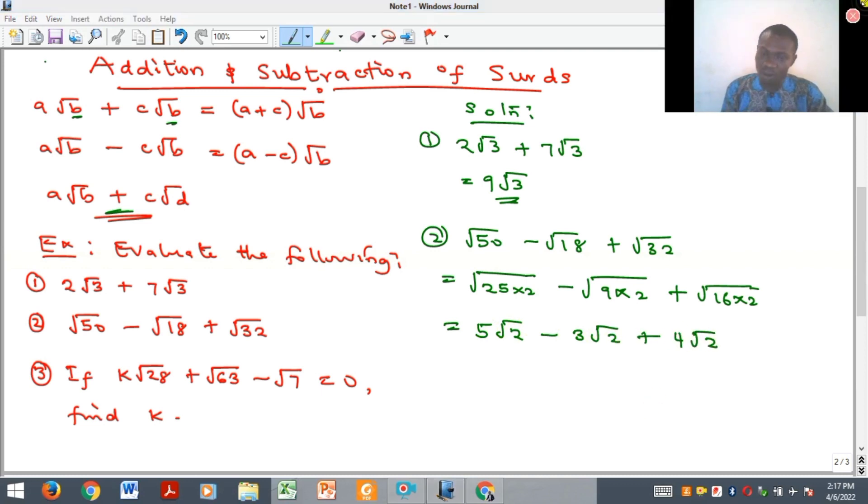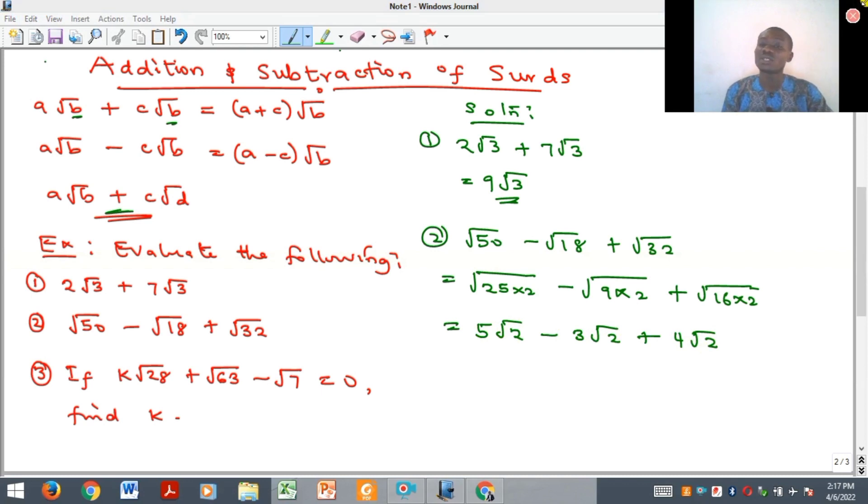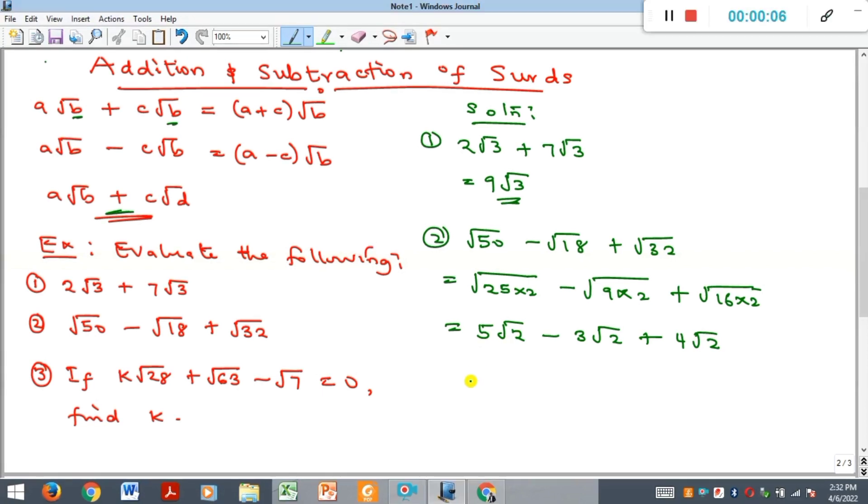And now, we now have similar surds. Immediately, your answer is at hand. So what do you do here? Just do your normal subtraction. What we're supposed to have here now is we're going to add the coefficients and subtract when necessary. So 5 minus 3 is 2, plus 4 will give us 6√2. And that's the solution to this problem.